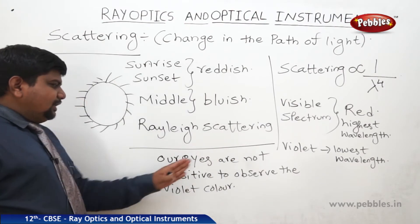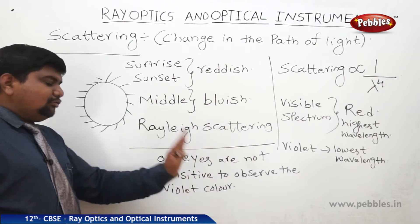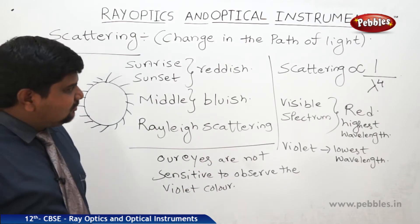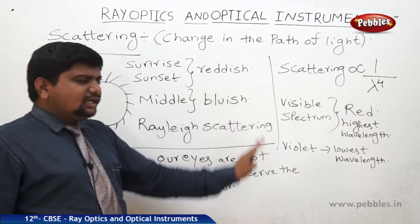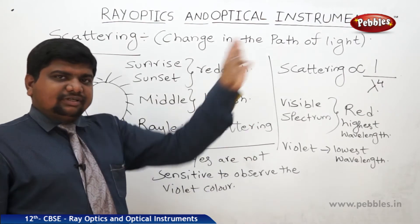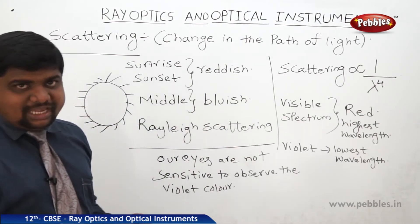Our eyes are not sensitive to observe the violet color. That is why blue color is visible for most of the time.